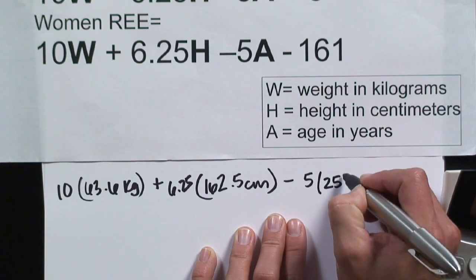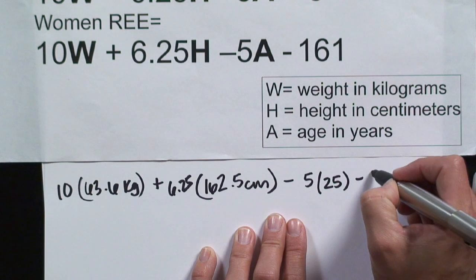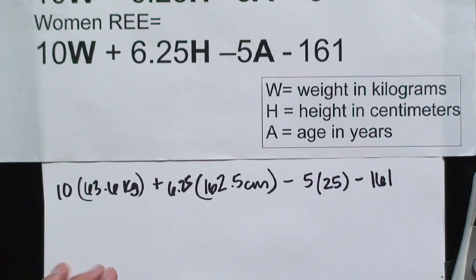Now we're going to subtract 5 multiplied by my age. I'm 25 years old, so we'll put in 25. And again, because I'm female, we subtract 161. So let's plug in this big equation here.